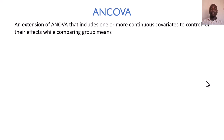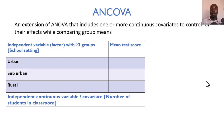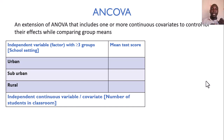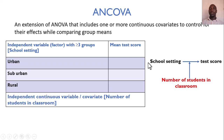ANCOVA, or Analysis of Covariance, is an extension of ANOVA that includes one or more continuous covariates to control for their effects while comparing group means. The independent variables under one-way and two-way ANOVA were categorical, but if we have a variable that is not categorical yet still considered an independent variable that influences our outcome, ANCOVA takes that into consideration. For example, alongside school setting, we believe that the number of students in a classroom can also influence performance and may confound the relationship between school setting and test performance.